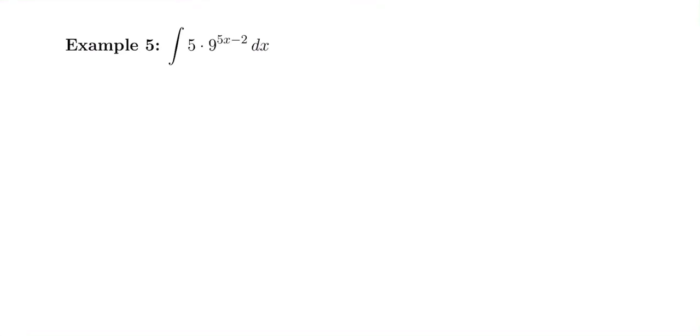Here we have something a little bit different. We have 5 times 9 raised to the 5x minus 2. So instead of it being like 5x minus 2 to the 4th power or something like that, instead of x being as part of our base, it's up in the exponent.